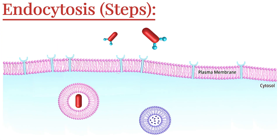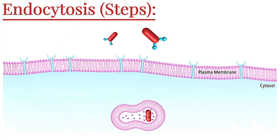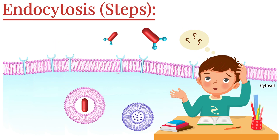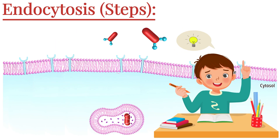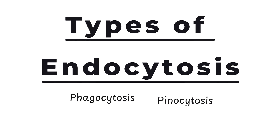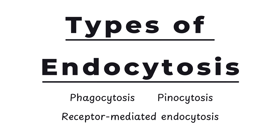Now that we've seen how endocytosis works step by step, you might be wondering: does every cell use the same method to bring things in? Actually, no. Depending on what the cell is taking in — whether it's solid particles, fluids, or specific molecules — the process takes different forms. Let's break down the three main types of endocytosis and see how each one is uniquely designed to handle different kinds of cargo.